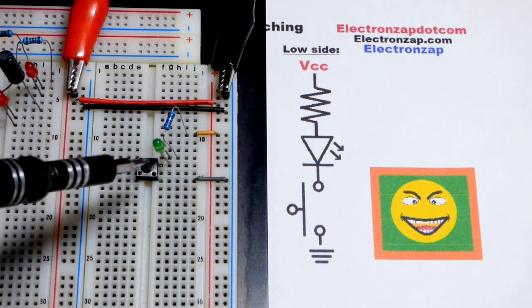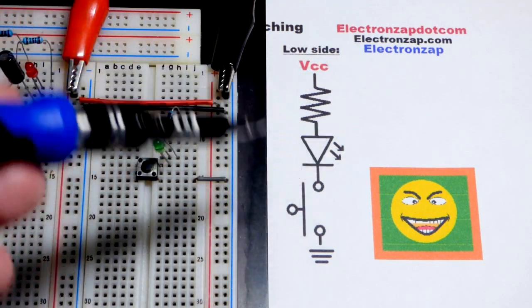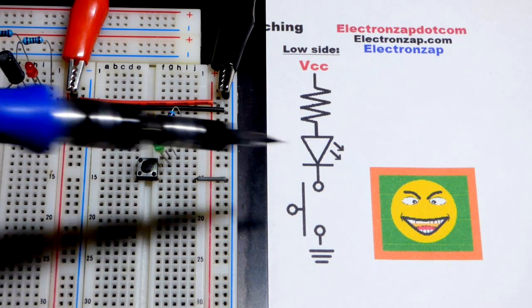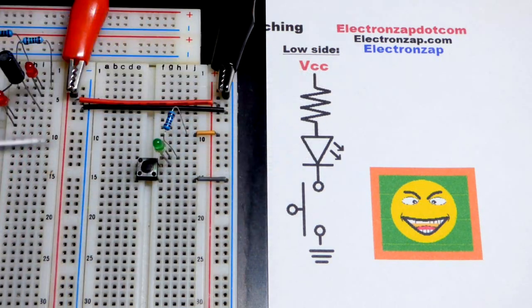So you won't see this as often but sometimes you'll see the switch on the low side of the load and maybe even the LED where the resistor is there and the resistor where the LED is there.